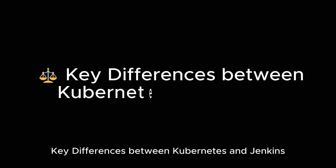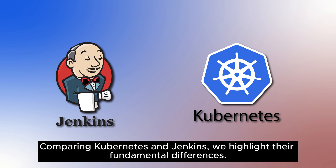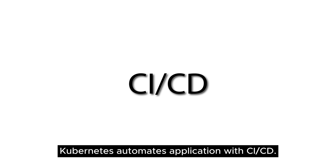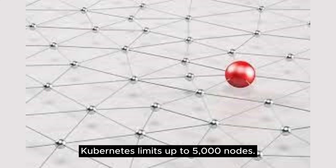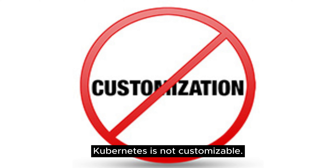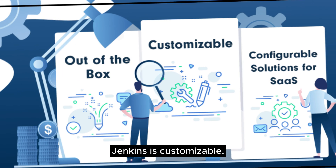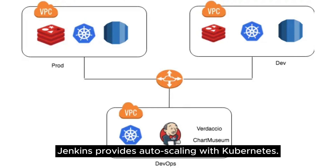Key differences between Kubernetes and Jenkins. Kubernetes automates application with CI/CD, while Jenkins runs, builds, and tests tools for applications. Kubernetes limits up to 5,000 nodes; Jenkins offers unlimited nodes. Kubernetes is not customizable, while Jenkins is customizable. Kubernetes has built-in auto-scaling support, whereas Jenkins provides auto-scaling with Kubernetes.